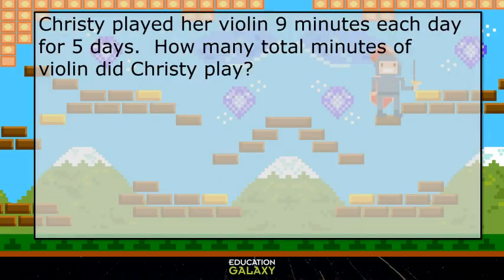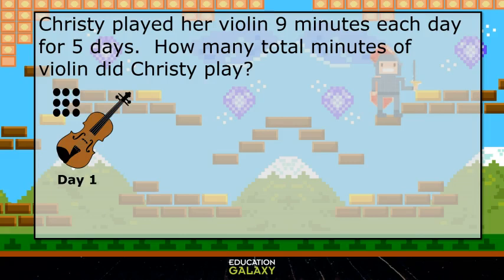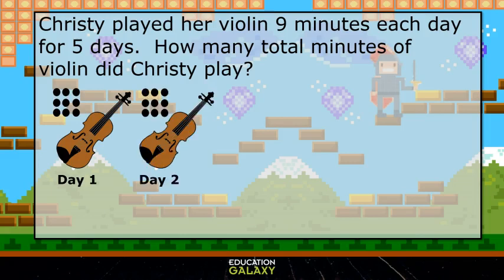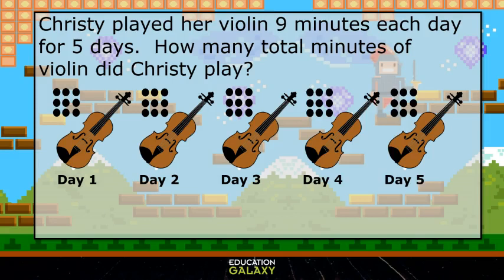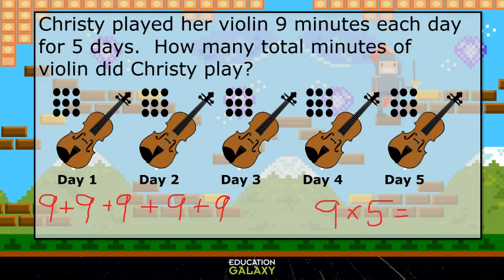Let's check out some word problems. Christy played her violin 9 minutes each day for 5 days. How many total minutes of violin did Christy play? Each day she played 9 minutes, so that would be 9 plus 9 plus 9 plus 9 plus 9, which can be represented as 9 times 5, which is 45. So our answer is 45 minutes.